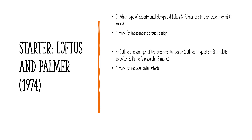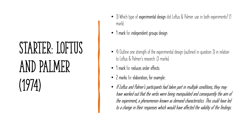You get the extra mark for elaboration. For example, if Loftus and Palmer's participants had taken part in multiple conditions using a repeated measures design, they may have worked out that the verbs were being manipulated and consequently the aim of the experiment — a phenomenon known as demand characteristics. This could have led to a change in their response, affecting validity. Demand characteristics is when participants change their behaviour because they act how they think the researcher wants them to, which means we're not actually measuring misleading information on eyewitness testimony accuracy.